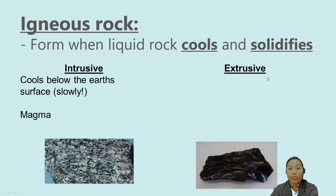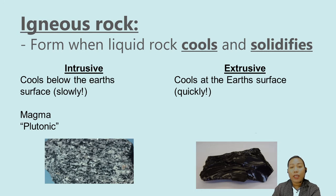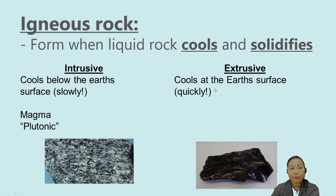The other type is the extrusive igneous rock. Extrusive igneous rocks cool at the earth's surface quickly. When lava comes out of a volcano, it cools rapidly at the surface and becomes an extrusive igneous rock, also called a volcanic rock.